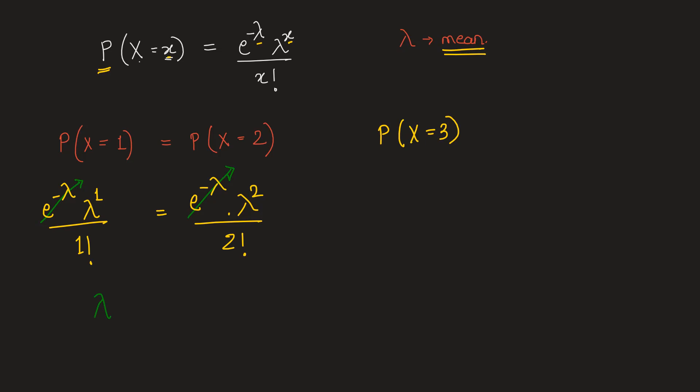So we get the left hand side as lambda, equal to on the right hand side lambda square upon 2 factorial, which is 2 times 1, which is 2.